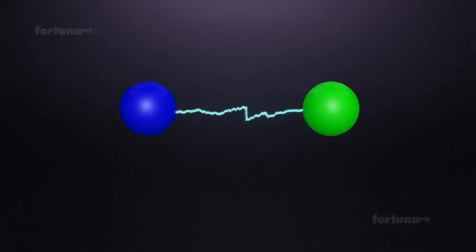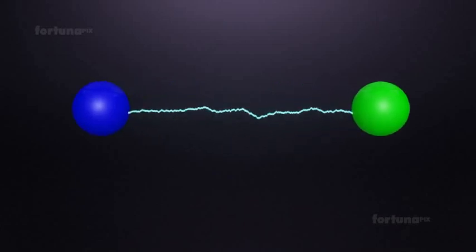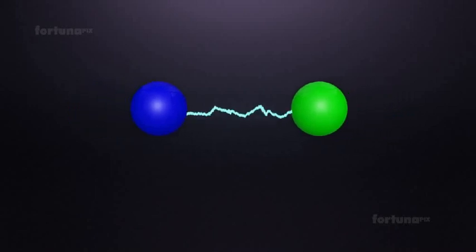If the distance between two objects is doubled, the force of attraction will be reduced by one quarter. If the distance is halved, the force of attraction will be quadrupled.